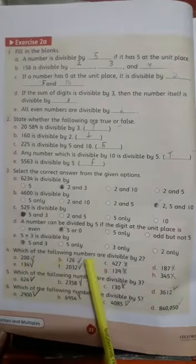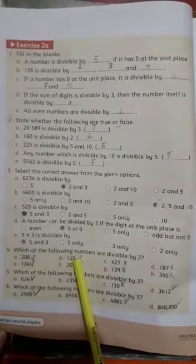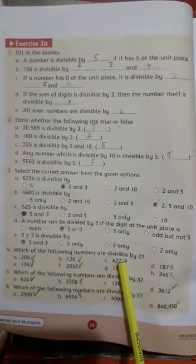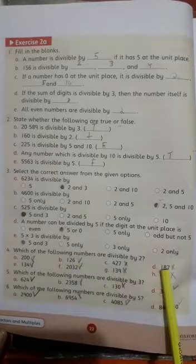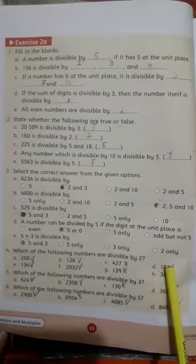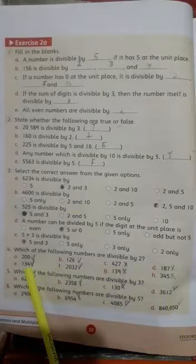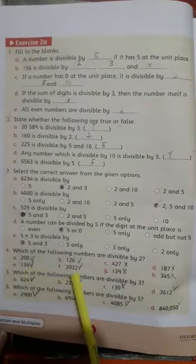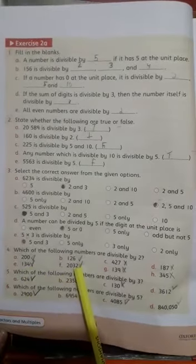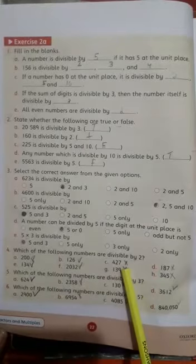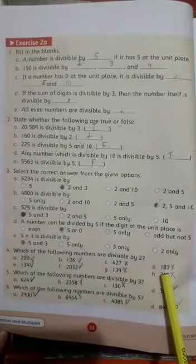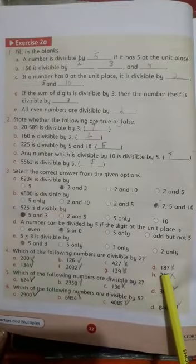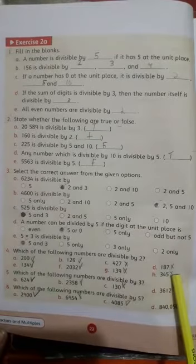Numbers ending in 6 are divisible by 2. Numbers with 7 are odd numbers, so not divisible by 2. Similarly, 5 is an odd number and not divisible by 2. Even numbers are divisible by 2, odd numbers are not.